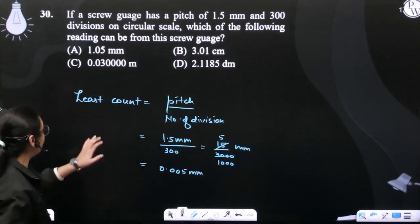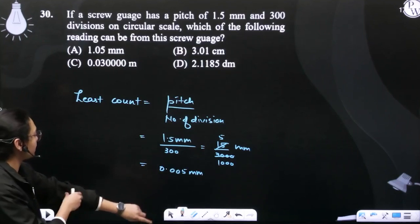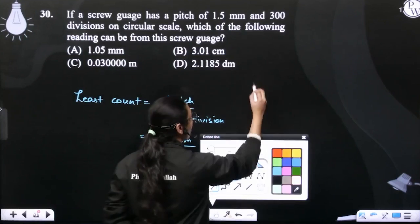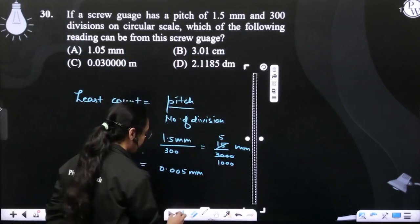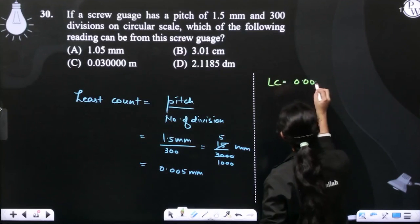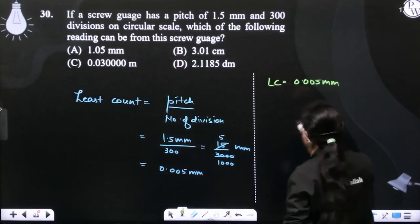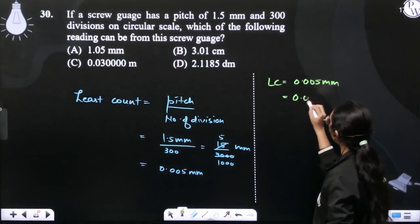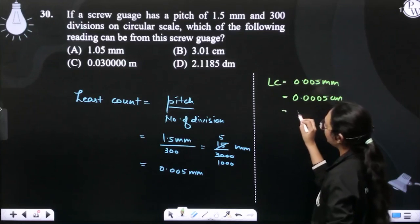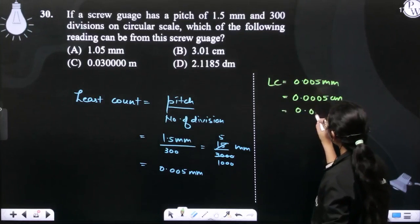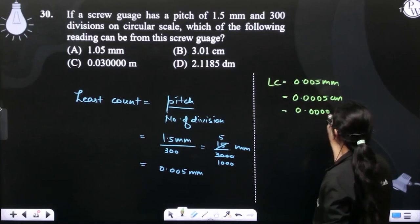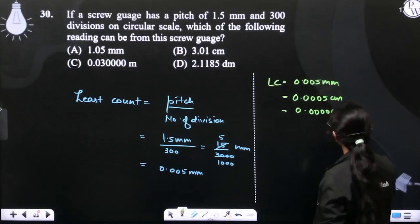Now, in mm, we need to write up to 3 decimal places. If I write the least count, it is 0.005 mm, which can also be written as 0.0005 cm or 0.000005 m.